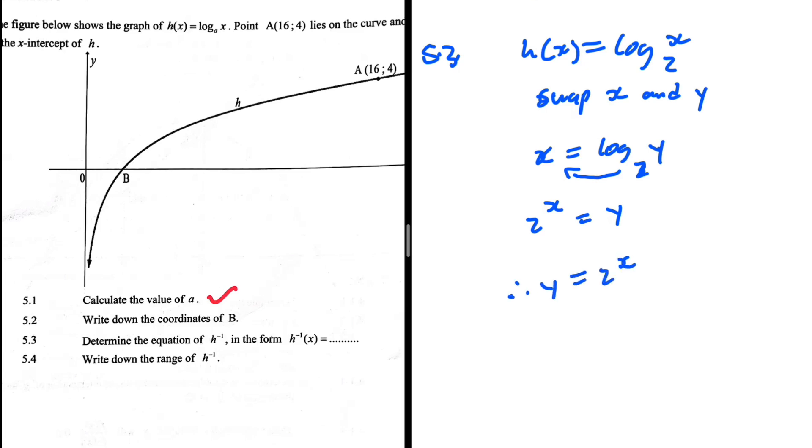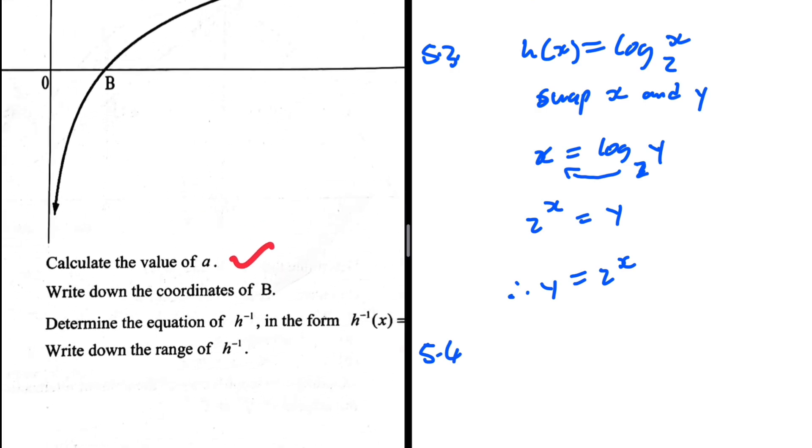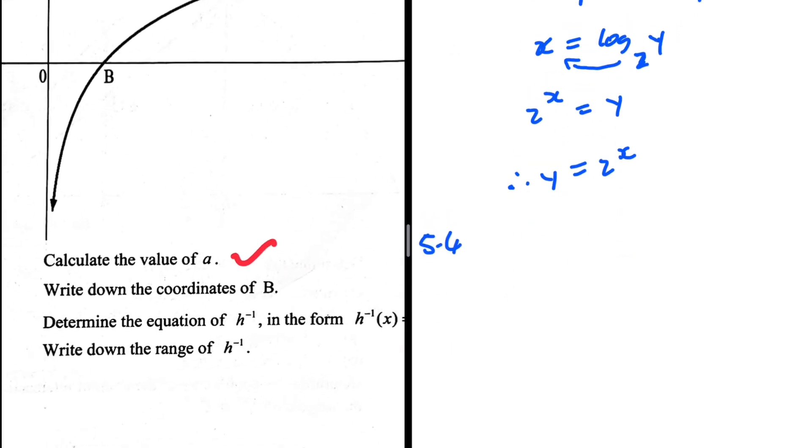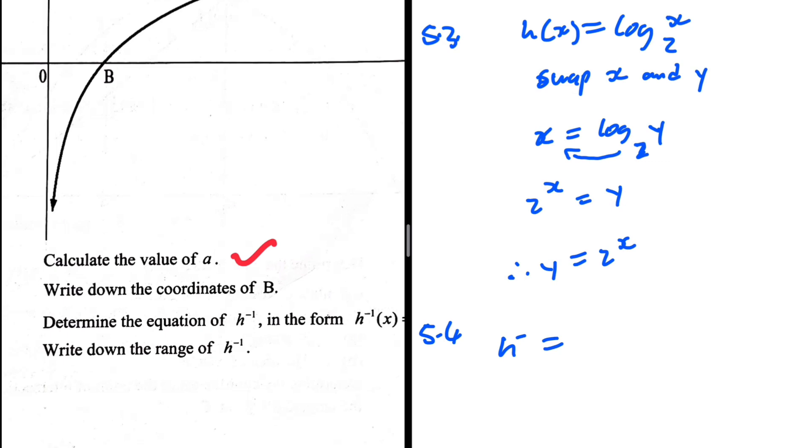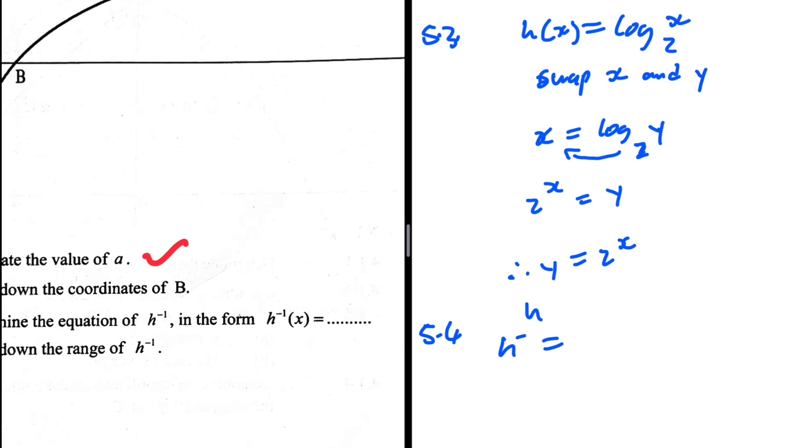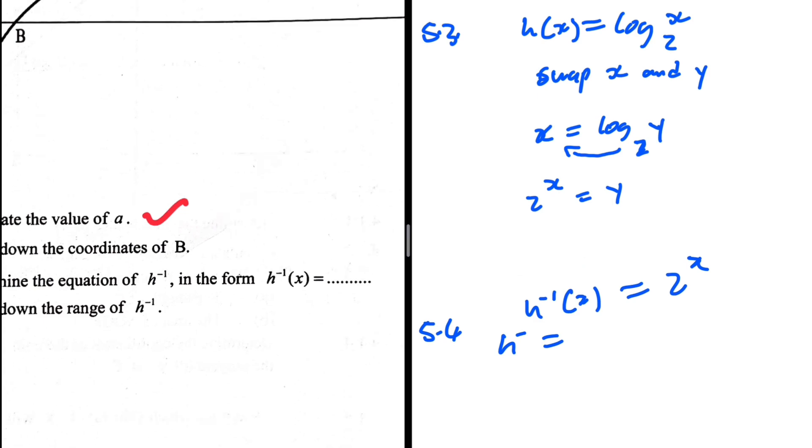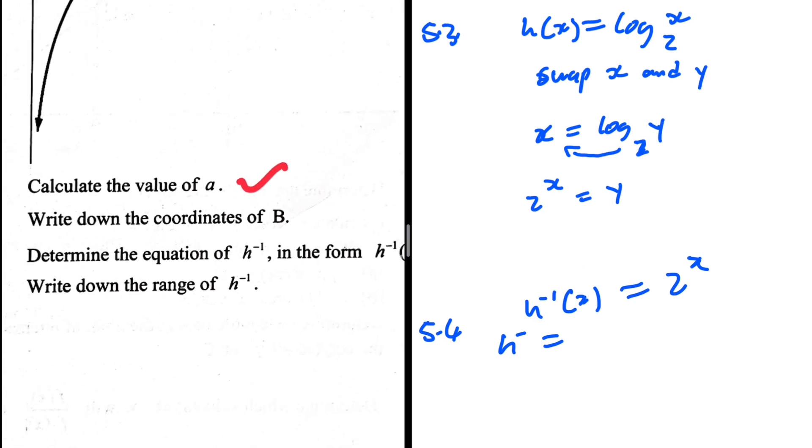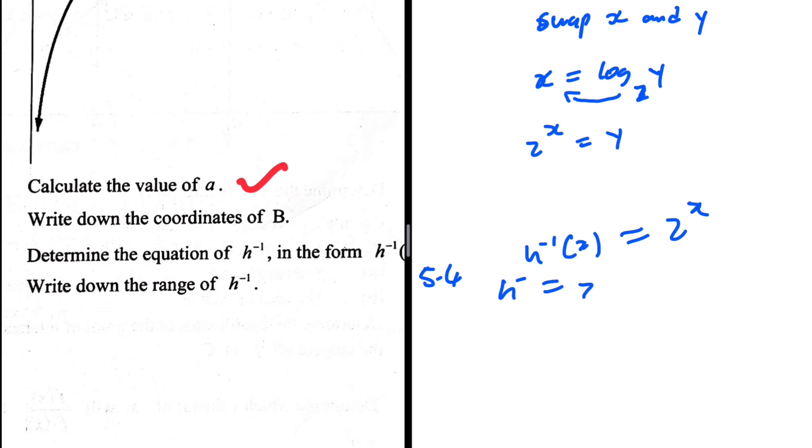5.4 asks to write down the range of h inverse. The question in 5.3 asks that we write it in the form h inverse of x, so h^(-1)(x) = 2^x. I almost forgot that. We're supposed to determine the range.